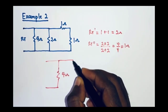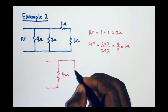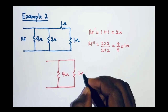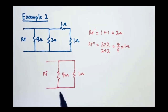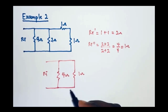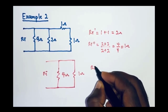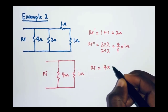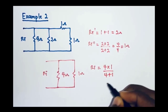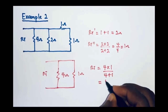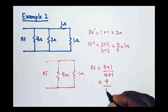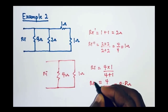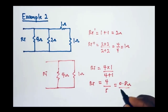Redrawing the circuit, we now have our 4 ohm resistor connected in parallel with a 1 ohm resistor. The total resistance Rt equals 4 multiplied by 1 divided by 4 plus 1, giving 4 divided by 5, which is 0.8 ohms. So the total resistance for this circuit is equal to 0.8 ohms.